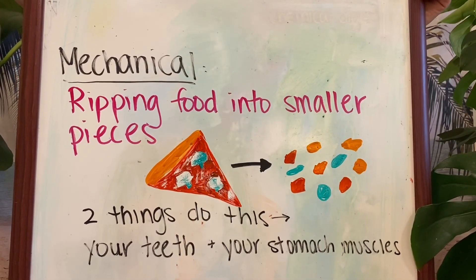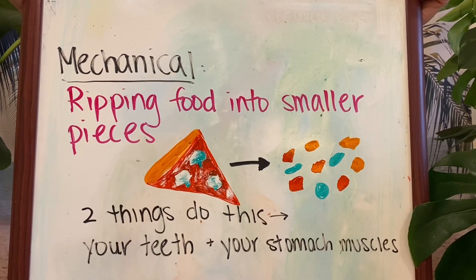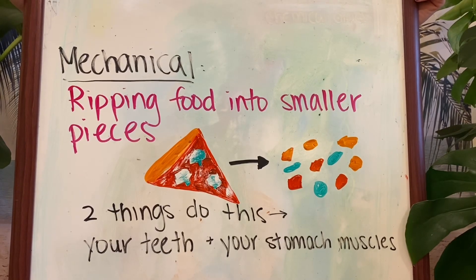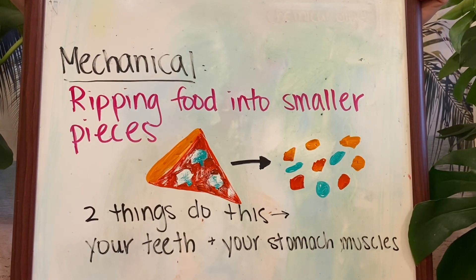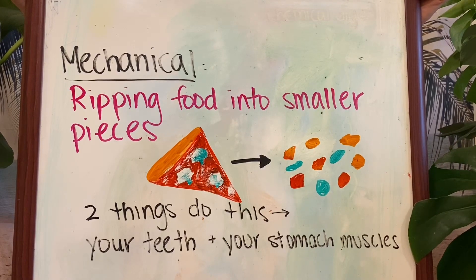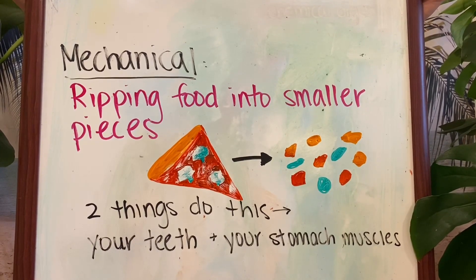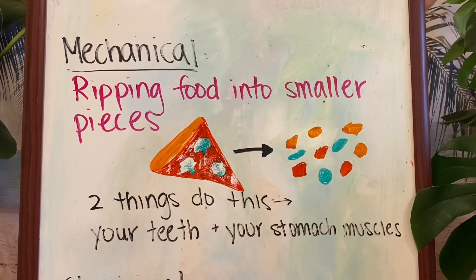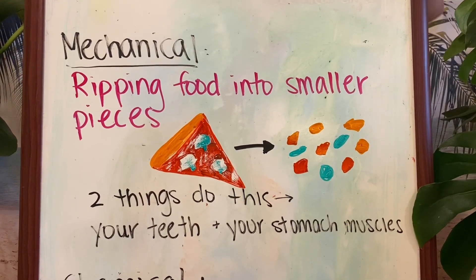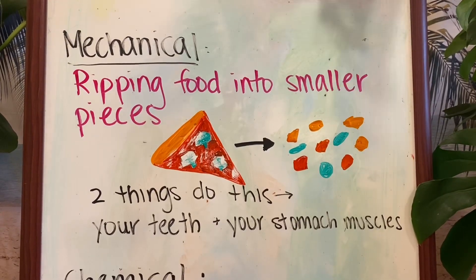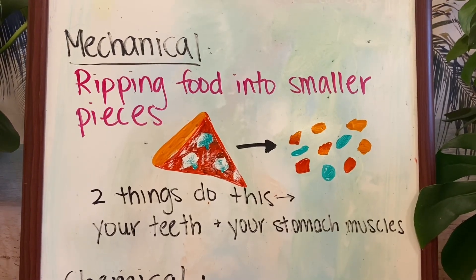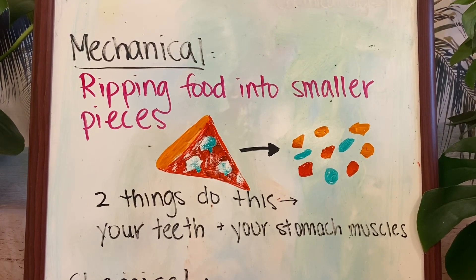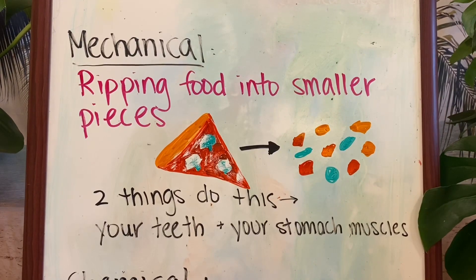Mechanical digestion is the first type. This is where you're just ripping your food into smaller pieces — not breaking it down chemically, not using any kind of enzymes, just ripping the food apart. This happens in two places: in the mouth, where the teeth chew your food into small pieces you can swallow, and in the stomach, where your muscles work really hard to break food apart even more. That's mechanical digestion.